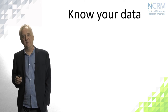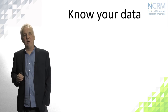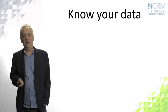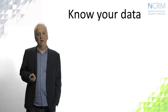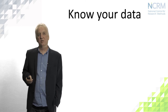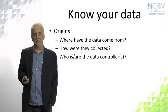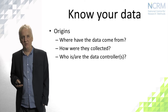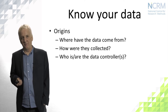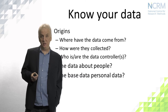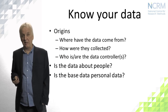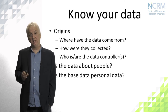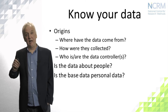Know your data. In the framework we have a template for doing this — actually having a map of all the different properties of data and thinking how these relate to the notions of risk is quite important. So where have the data come from? How were they collected? Who are the data controllers? Are there any other parties involved as data processors? Is the data about people, and is the base data personal data? Data could be about people and not be personal if it's been anonymised, and similarly data can appear not to be about people but still be personal data.